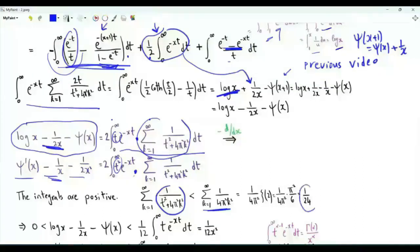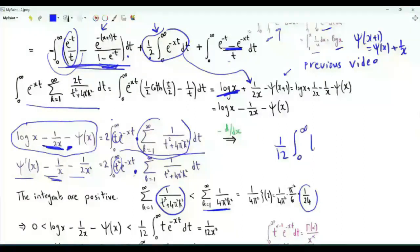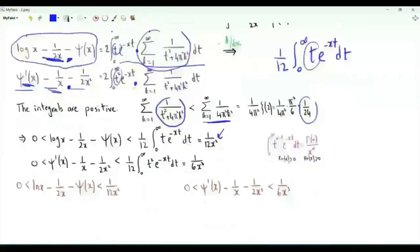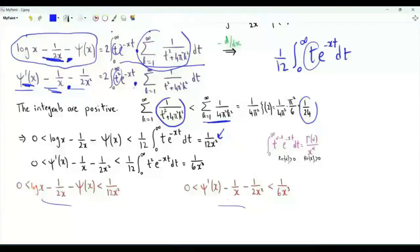The summation is upper bounded by 1/24, giving an upper bound of 1/12 for the integral factor. The integral of t·e^{-xt} dt from 0 to infinity equals 1/x², so the upper bound on log(x) - 1/(2x) - digamma(x) is 1/(12x²). For the trigamma inequality the same argument applies with t² replacing t, giving the upper bound 1/(6x³). We have established that both quantities are positive and bounded above.